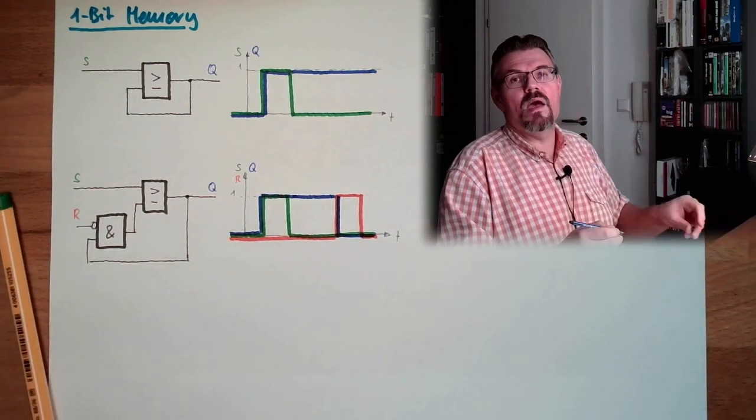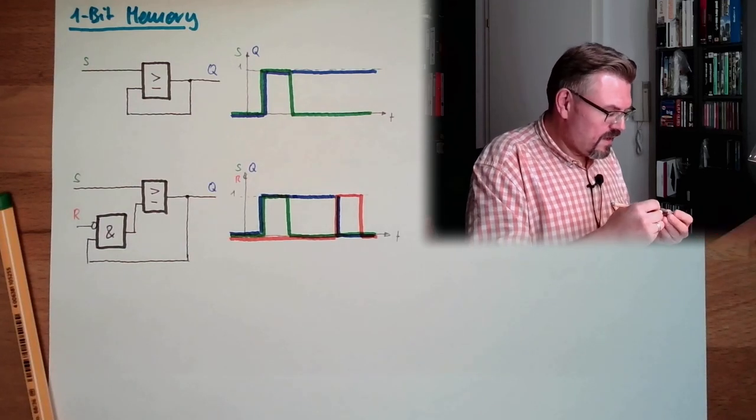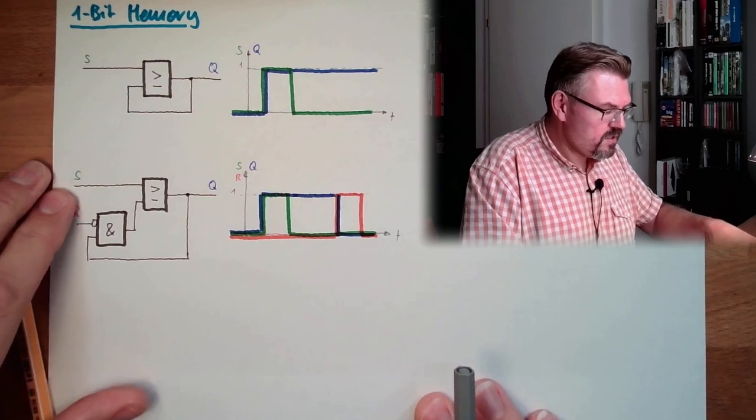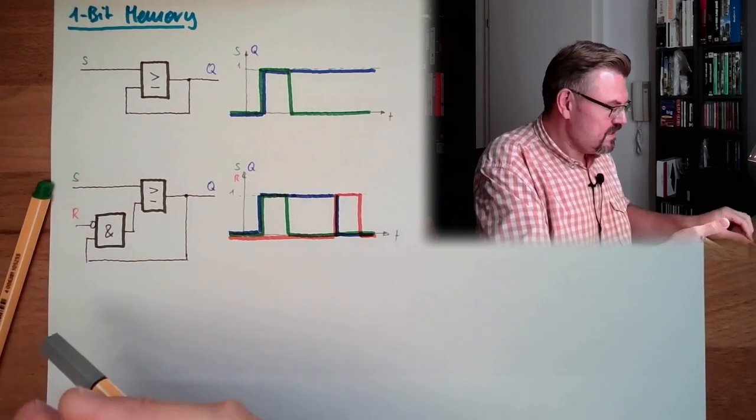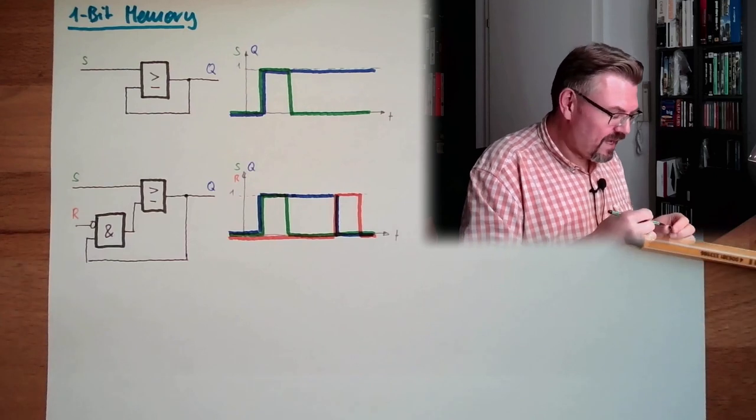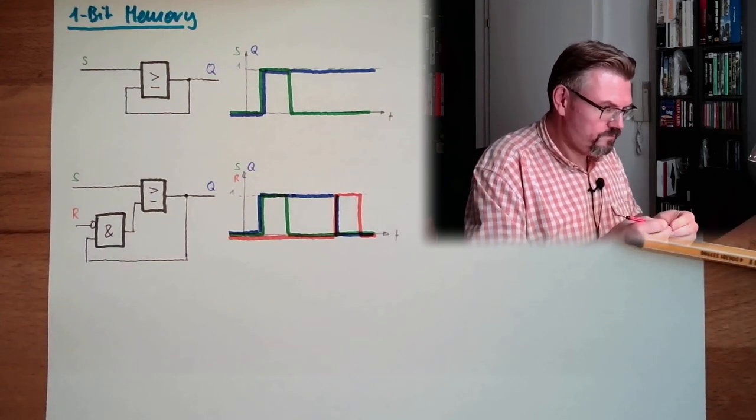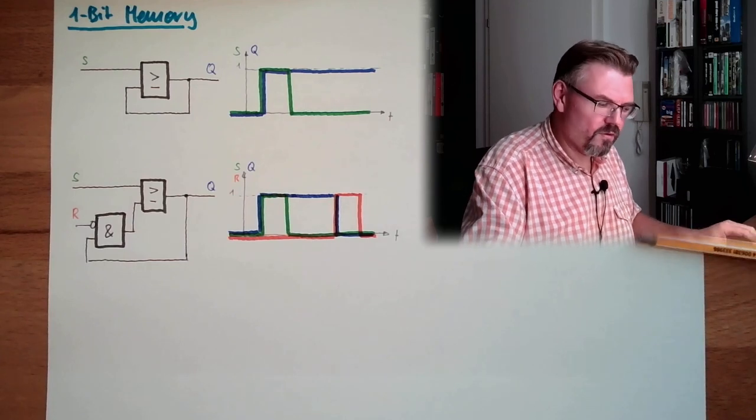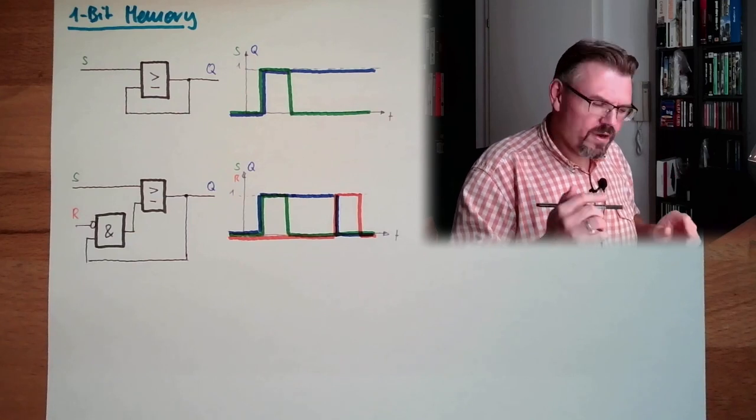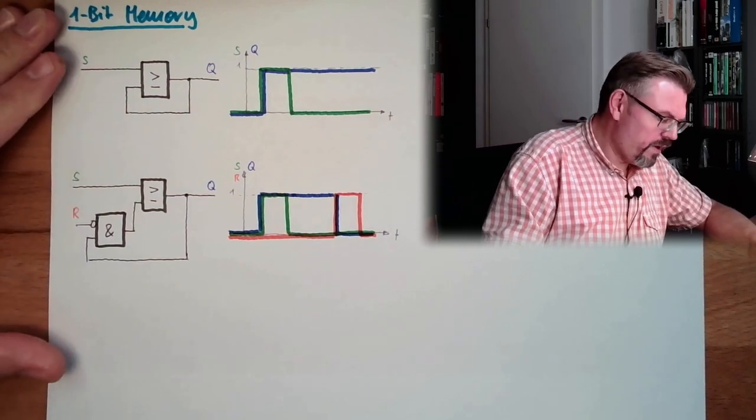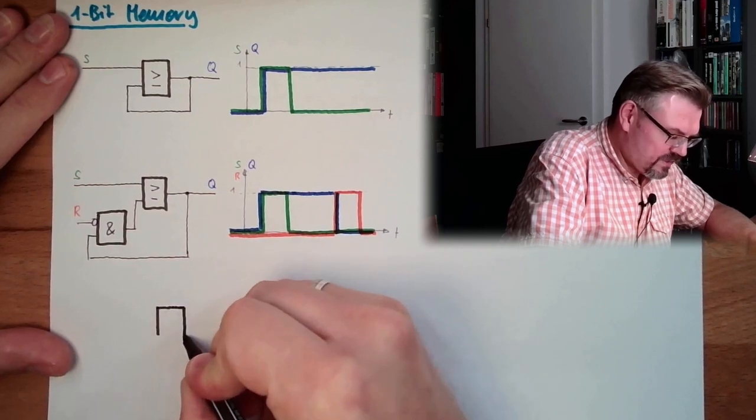One bit memory. All right. So this memory can store information and reset information, get rid of information again. This is how one bit memory with standard element might look like. Great, huh? And we have already talked about NAND and NOR technology. I show you how a NOR memory looks like. Because they are very usual. And I tell you, two elements are enough.